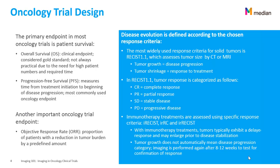Disease evolution is defined according to the chosen response criteria. The most widely used response criteria for solid tumors is RECIST, and now the latest RECIST 1.1, which assesses tumor size by CT or MRI modalities. Tumor growth means tumor progression, and tumor shrinkage means response to treatment.